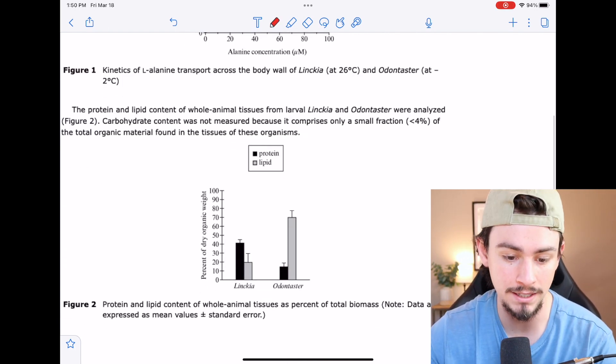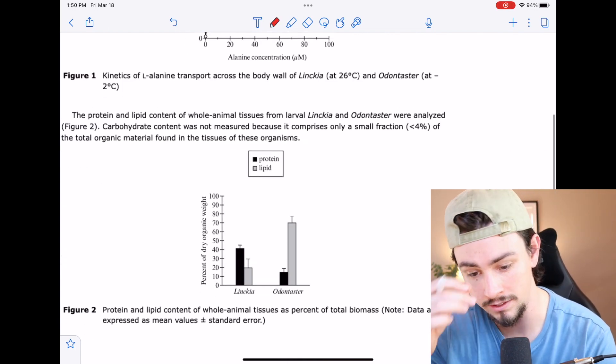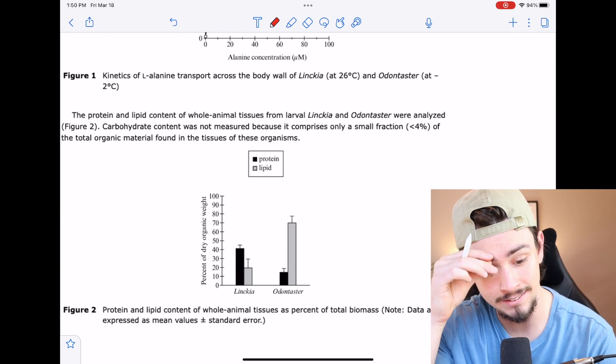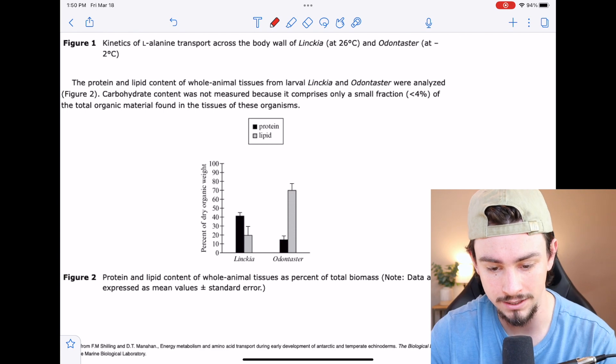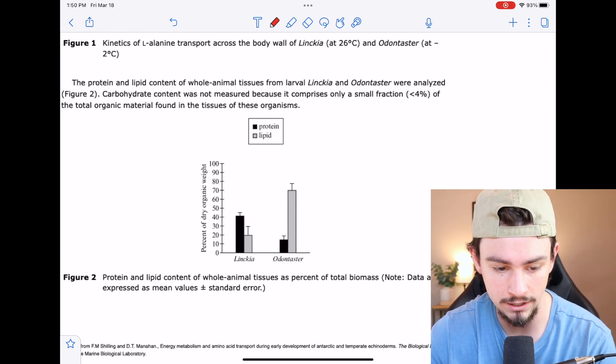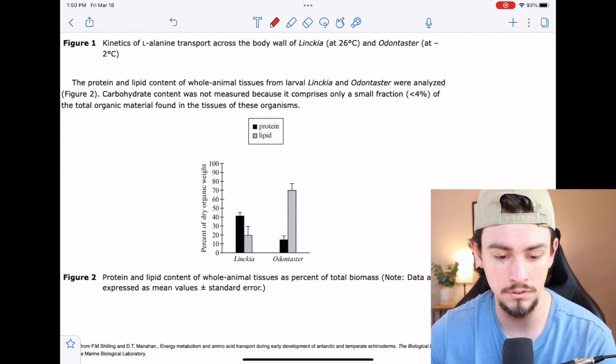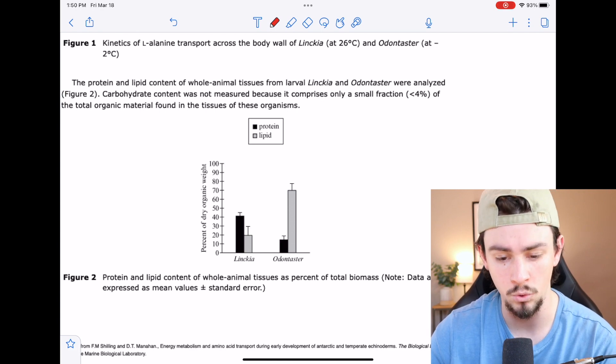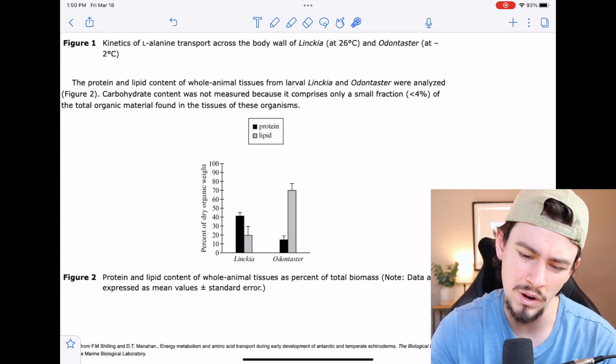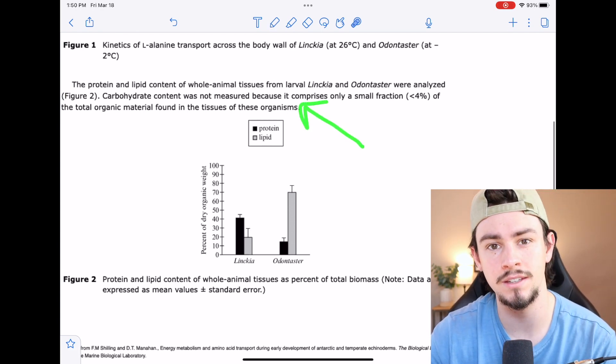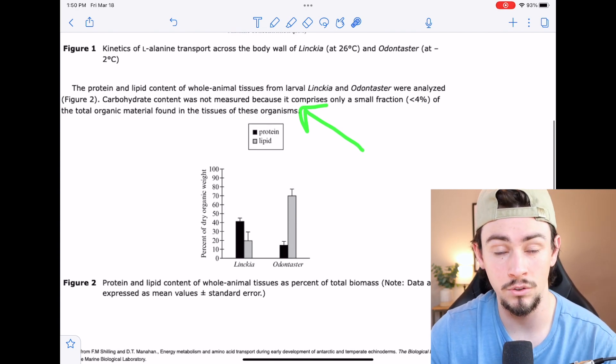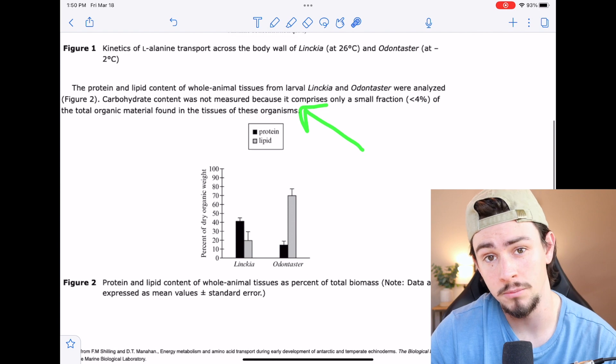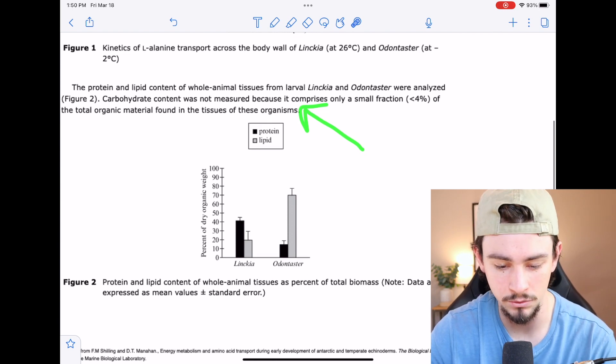Last paragraph says, the protein and lipid content of whole animal tissues from these larvae were analyzed. And that's shown in figure two. And carbohydrate content was not measured because it comprises only a small fraction of the total organic material found in the tissues of these organisms. The only way that I could really see them questioning this is if they were to ask about a study flaw. And the answer would be along the lines of, we should have included carbohydrates in this study. But it doesn't seem too important yet.